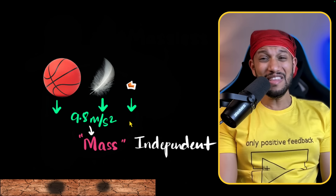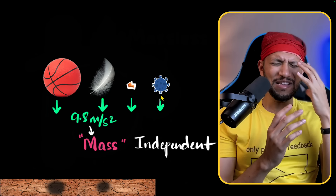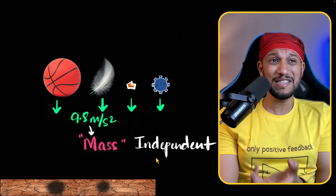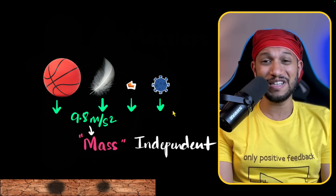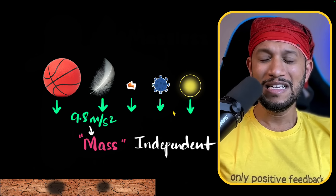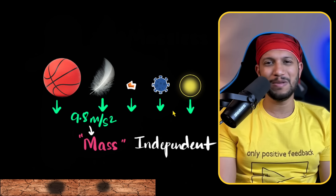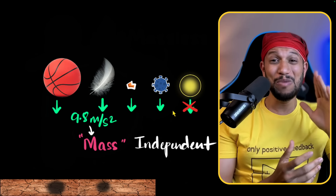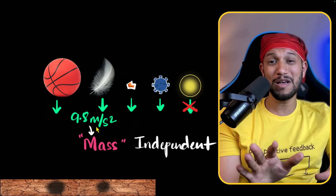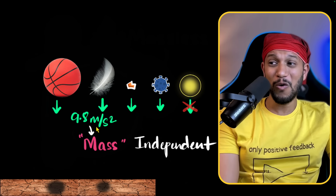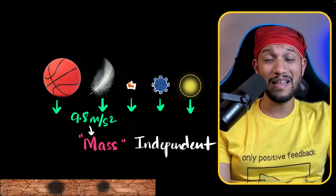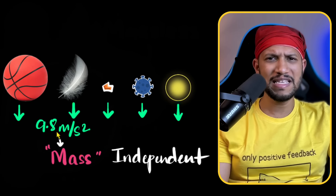Newton asks again: what if we consider even lighter particles, say a virus? It's very hard to visualize, but it should also accelerate down at 9.8 meters per second squared. Newton, what's your point? And now Newton asks: Mahesh, what if we consider the lightest particle — light? What happens to it? I say no, this cannot apply to light. But Newton says: why not? We just saw that this acceleration is independent of mass, regardless of what mass we're dealing with. So shouldn't it also hold for light? This is how, even in Newtonian physics, we can argue that gravity should affect light.